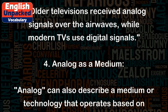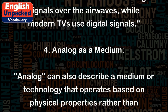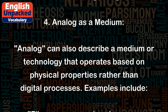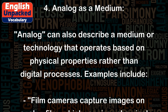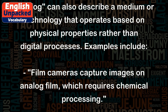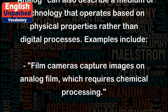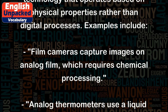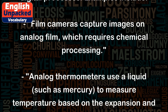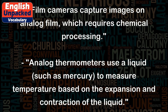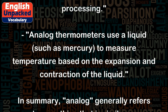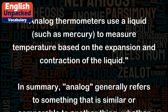4. Analog as a medium. Analog can also describe a medium or technology that operates based on physical properties rather than digital processes. Examples include film cameras, which capture images on analog film that requires chemical processing, and analog thermometers, which use a liquid such as mercury to measure temperature based on the expansion and contraction of the liquid.